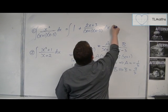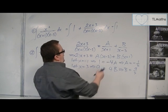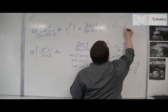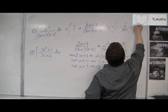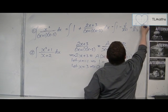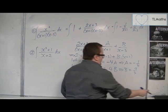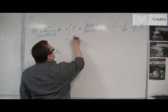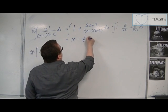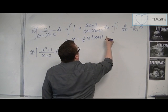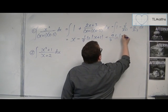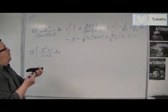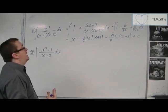So we can now write this as the integral of 1 minus 1/4 over (x+1) plus 9/4 over (x-3) dx. And then you can integrate it. So this integrates to x minus 1/4 log|x+1| plus 9/4 log|x-3| plus c. And that's how we would go about it. So you would use polynomial division first and then partial fractions in order to get there.